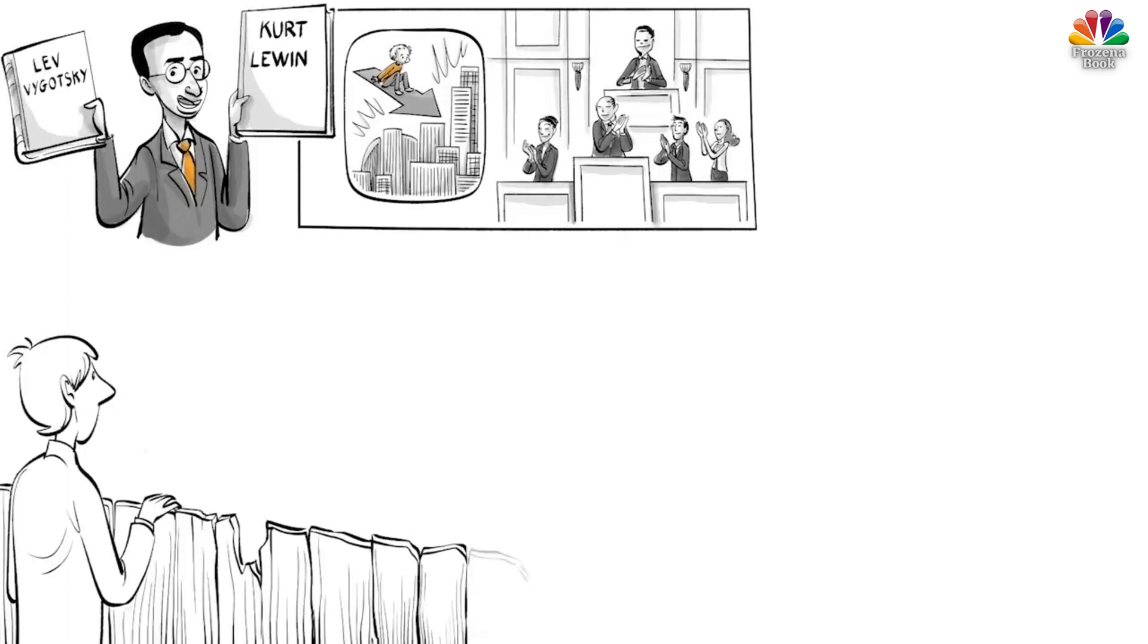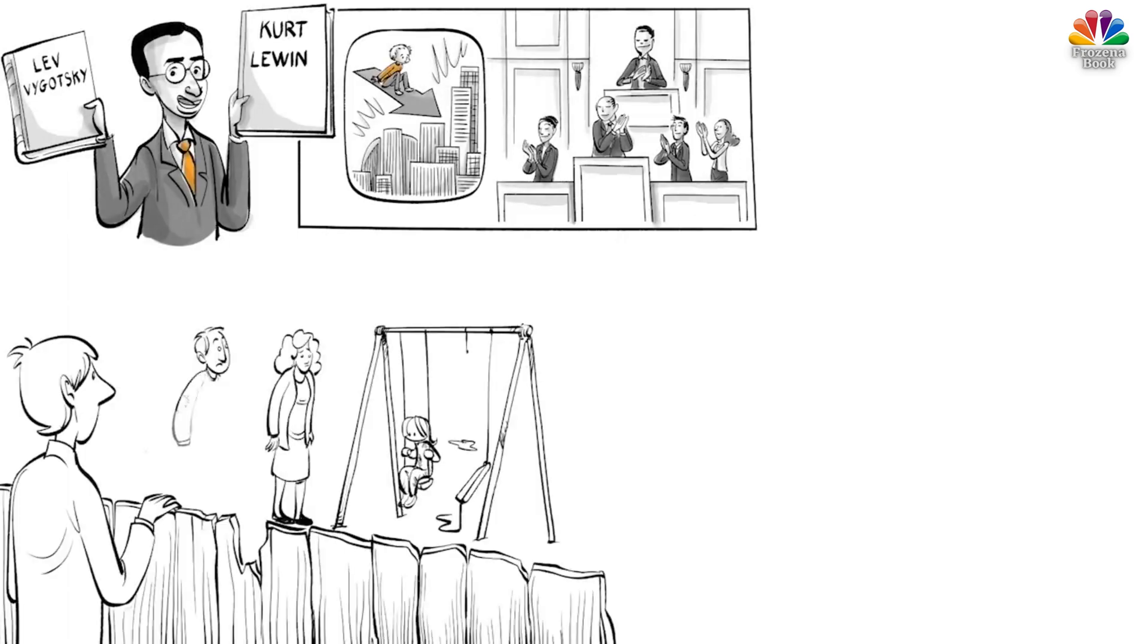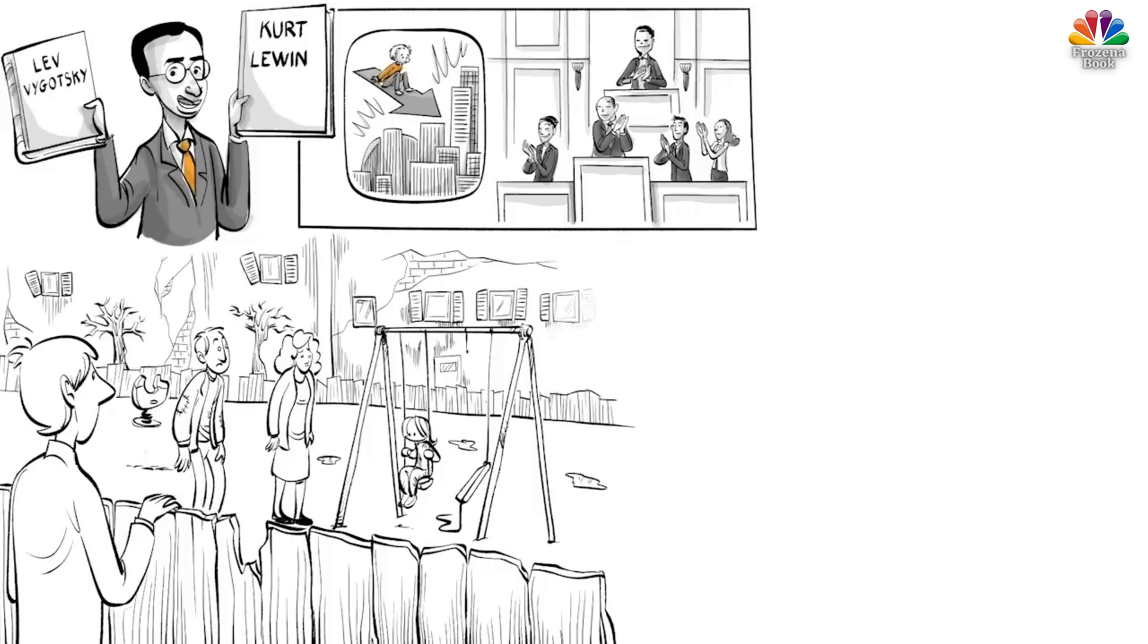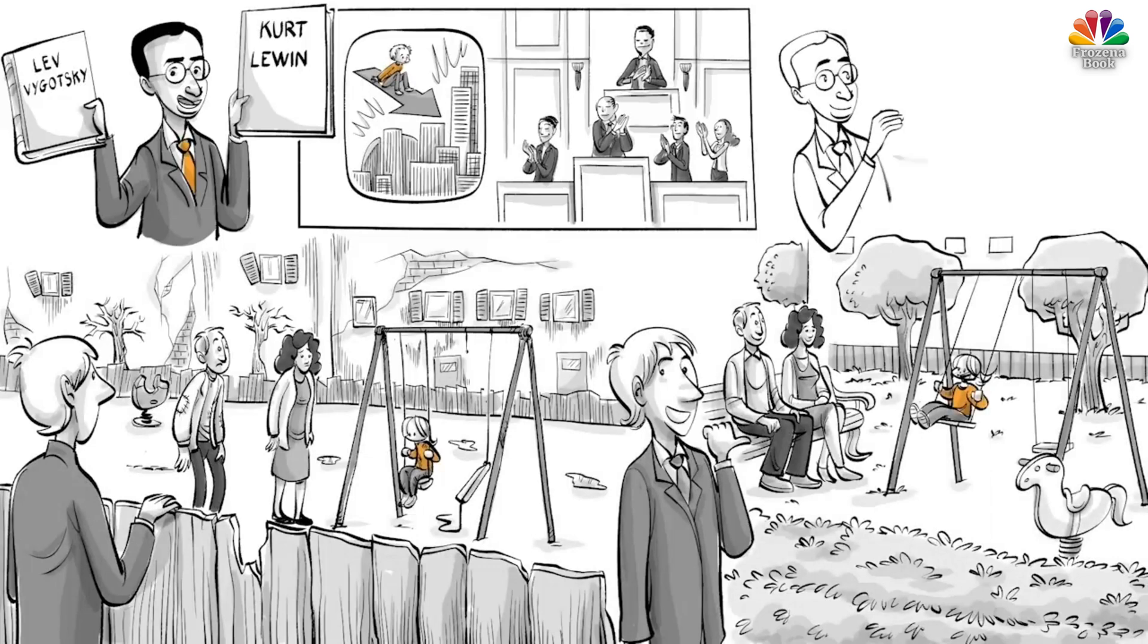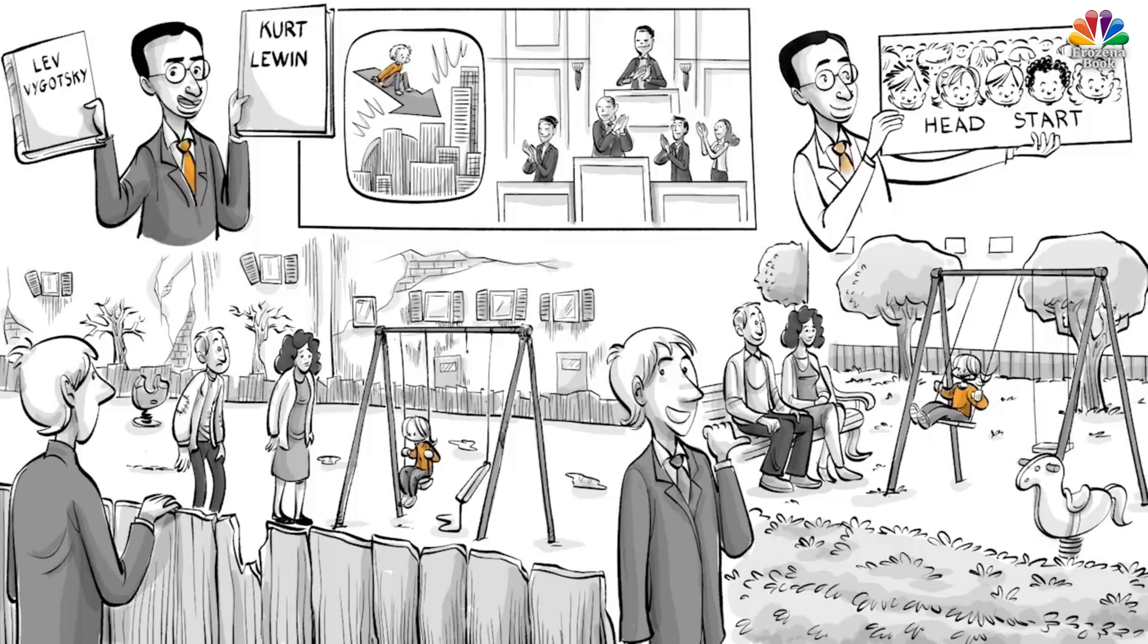Children who grow up in unfortunate social structures, therefore, need a form of support that not only reaches their families, but also elements of their community. Bronfenbrenner's theory helped form the Head Start program in 1965, a government program that has served more than 35 million poor children since.